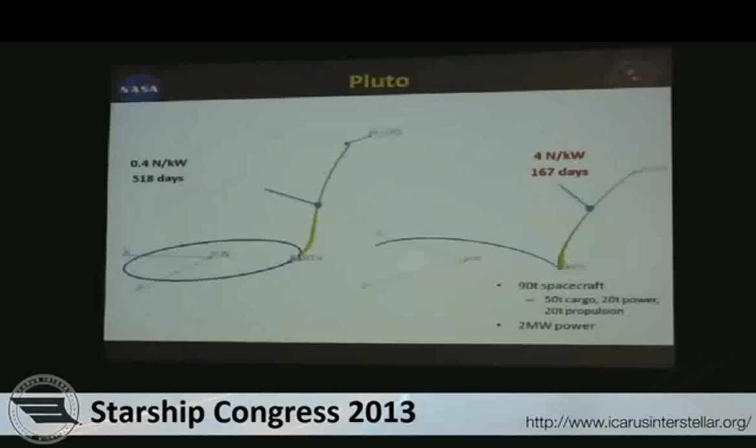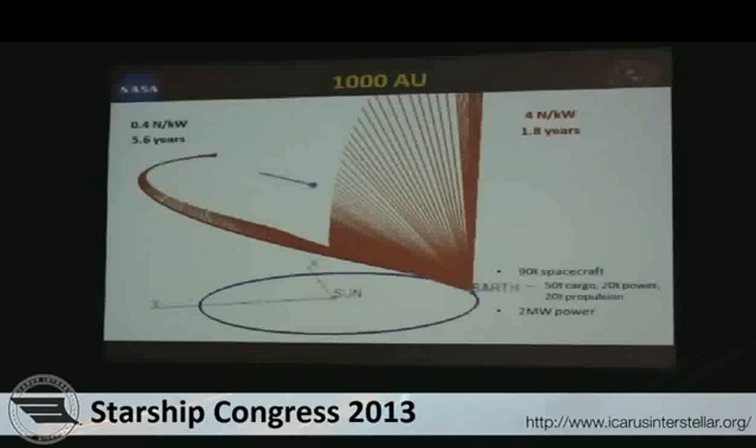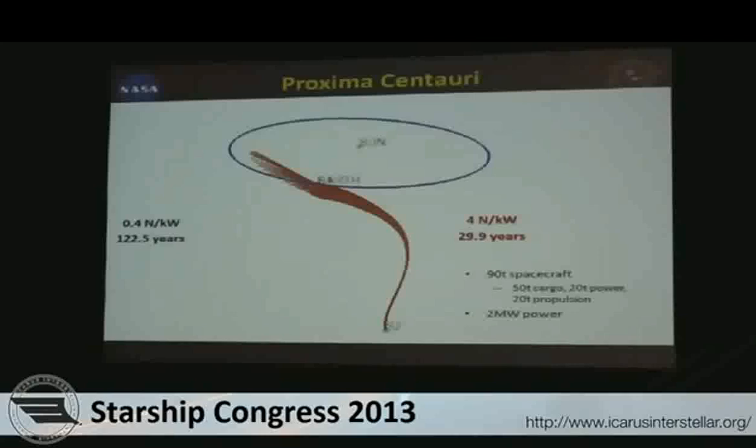We also did a trajectory analysis for an interstellar mission using just Q thrusters — captured, accelerating and decelerating halfway. At 0.4 newtons per kilowatt, we're just a little over 122.5 years. Interestingly, Copernicus can natively handle galactic coordinates, so you can put in any galactic destination and solve for a trajectory — a useful finding we worked out with the University of Texas.